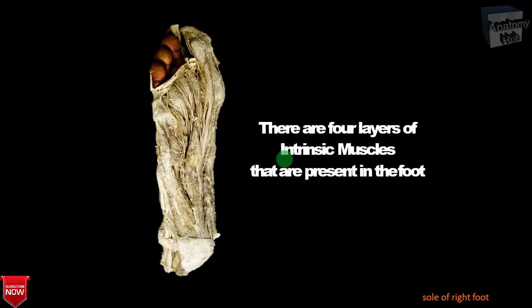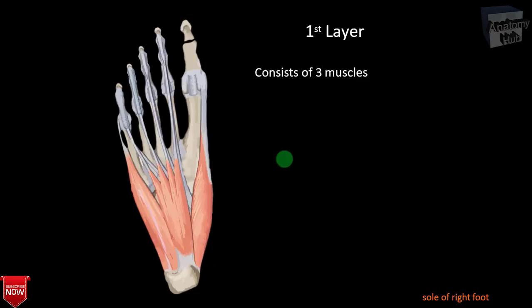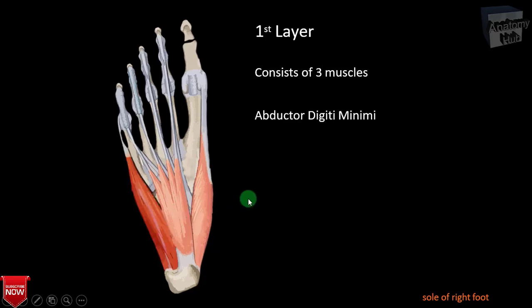There are four layers of intrinsic muscles beneath the plantar aponeurosis in the foot. We will study them one by one. The first layer consists of three muscles: one on the medial side, one in the intermediate area, and one on the lateral area.